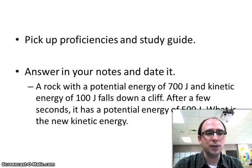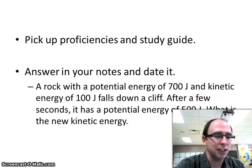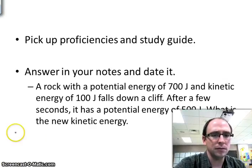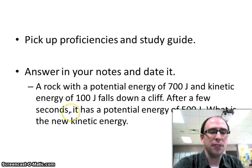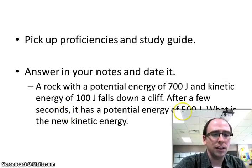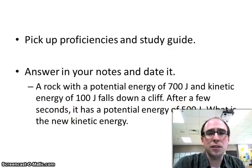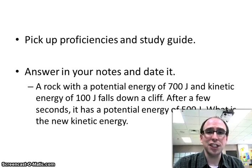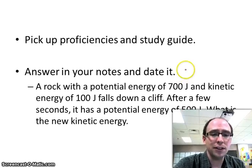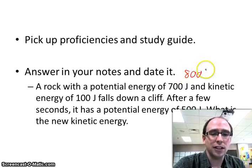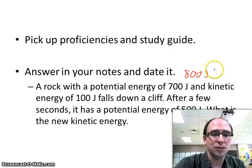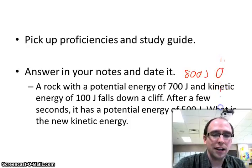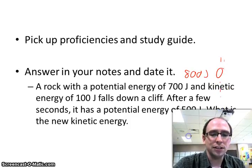When you're reading through it, you have this rock that has a potential energy of 1,700 joules and kinetic energy of 100 joules. And if you can remember, the total energy doesn't change. So if you figured out that the total energy that the rock starts with is 800 joules, as it's fallen down later on, it'll still have a total of 800 joules.